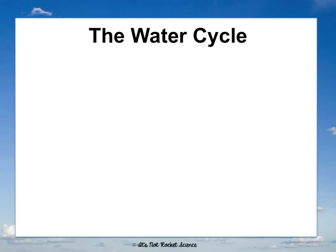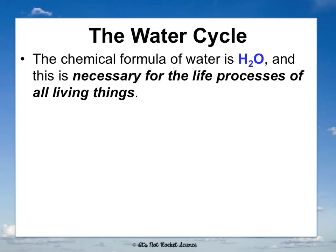In class, we're going to go through one cycle and then do some activities for each one. First is the water cycle. The chemical formula for water is H2O, and it is necessary for the life processes of all living things. Something very interesting about the water cycle is that water stays H2O throughout the cycle — it doesn't change chemically, it's just changing in physical form or state.